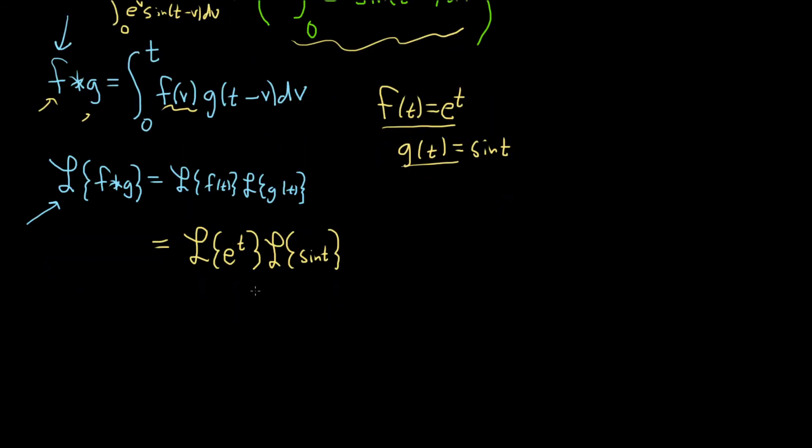And the Laplace of e to the t is simply 1 over s minus 1. That's a function of s. And that's because the Laplace of e to the at, the formula for that is 1 over s minus a. So here a is equal to 1.